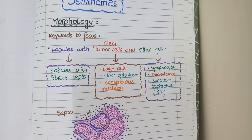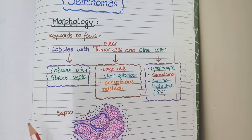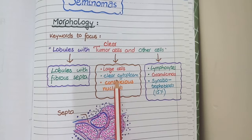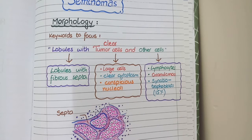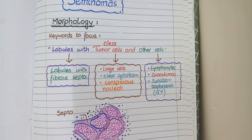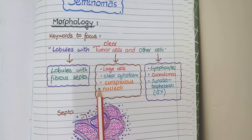The second keyword is clear tumor cells. Tumor cells in the lobules are large in size, with a clear cytoplasm that does not stain eosinophilic, and they have prominent and conspicuous nuclei and nucleoli. So overall, the cells are large in size with clear cytoplasm and conspicuous nuclei and nucleoli.